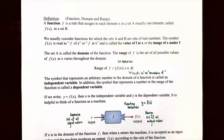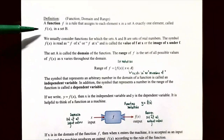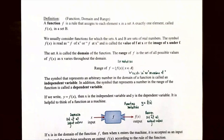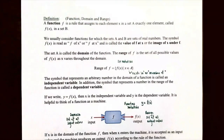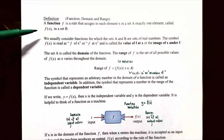We're going to talk about the definition of a function, domain, and range. A function is a rule — sometimes called a correspondence — that assigns each element x from one set A to another element from set B. It's written as f(x), read as 'f of x,' and represents the function value at x. The set A contains all input values — this is called the domain. The range is set B, containing all output values, f(x).